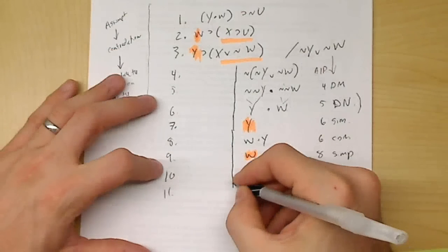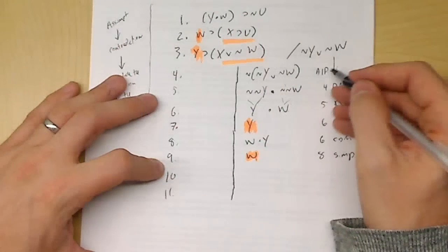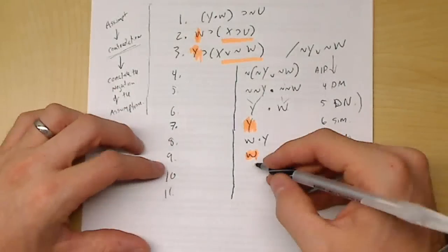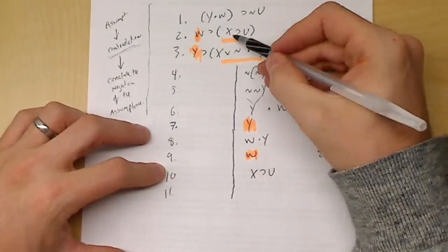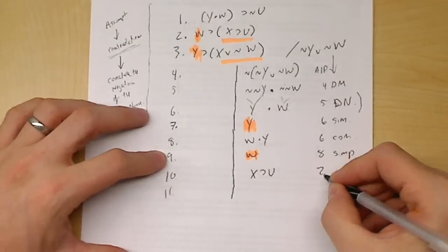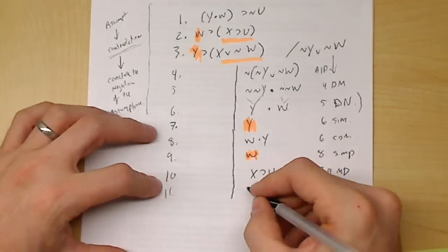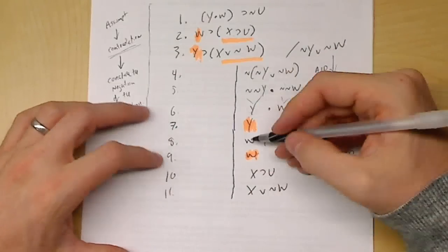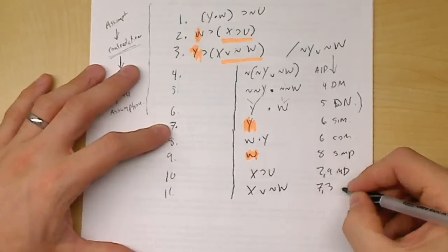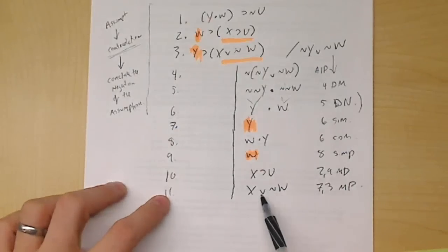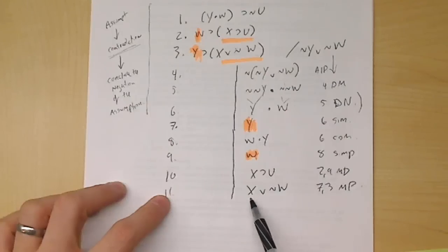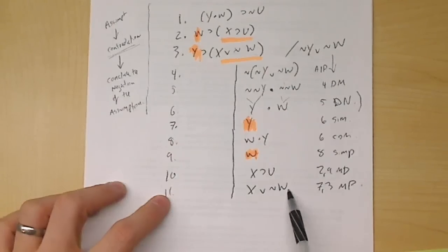Now I can use modus ponens to unlock things. I have Y here, I have Y up in line two, I have W here, I have W there. So I can unlock those two. So let's do that — lines 10 and 11. So that means I get if you have X, then you have U — that's line two and nine modus ponens. And I have ¬Z∨¬X or whatever — wait, let me think through this. My goal is still to get a contradiction. I haven't got there yet.